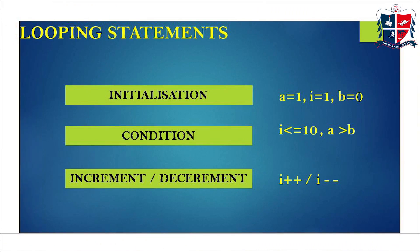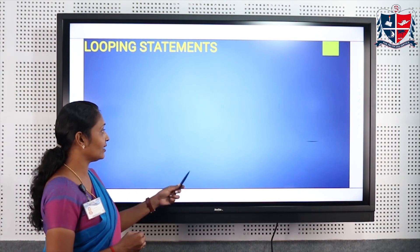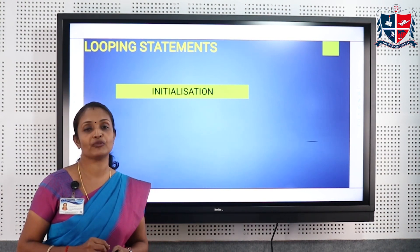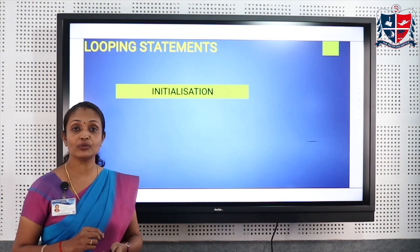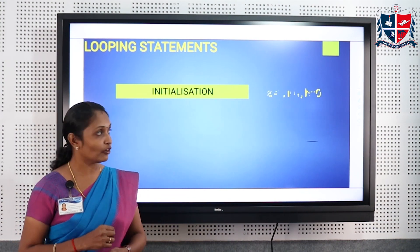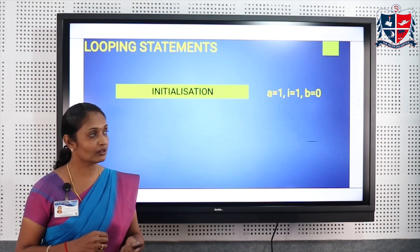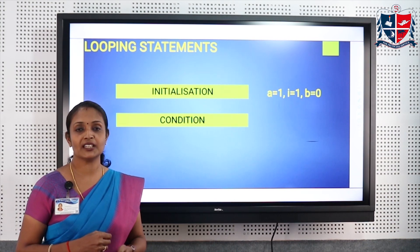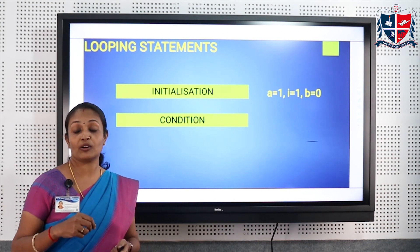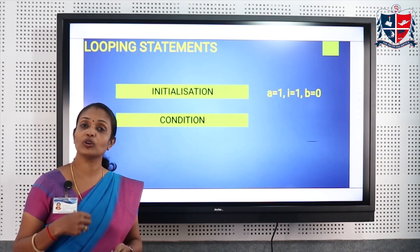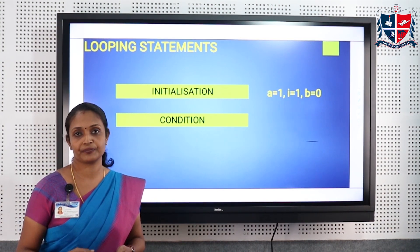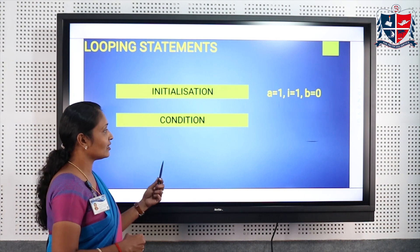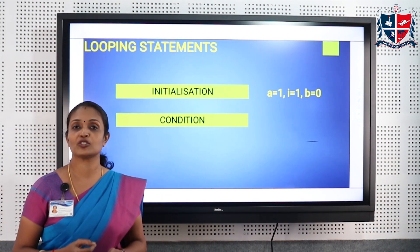Normally every looping statement has three parts. The first part is initialization — we have to set the starting value of the variable, or we can say we have to set the looping counter. For example: a = 1, i = 1, b = 0, etc. The second part is the condition — we have to check up to what time the body of the loop has to be executed.